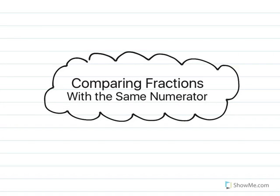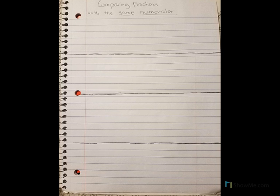Hi everyone. Today's video is going to be about comparing fractions with the same numerator. The first thing you need to do is divide your paper into four sections. Make sure you do this step because this will help you manage your space so that you don't use up too much space and then run out at the end. Make sure you have your title at the top of the page.